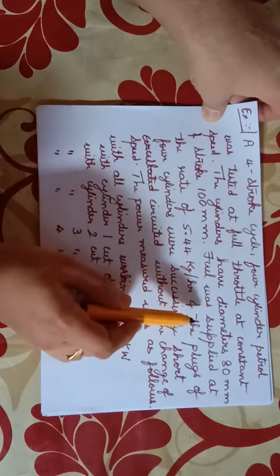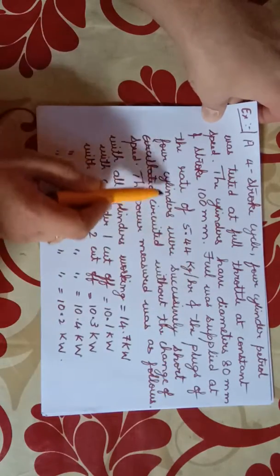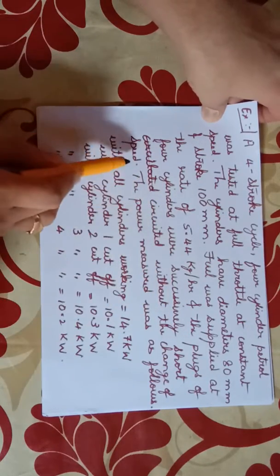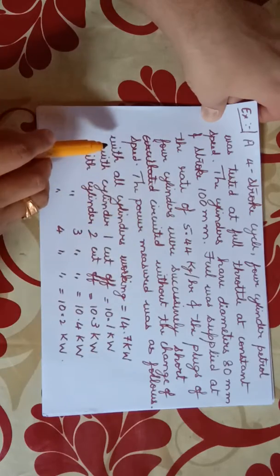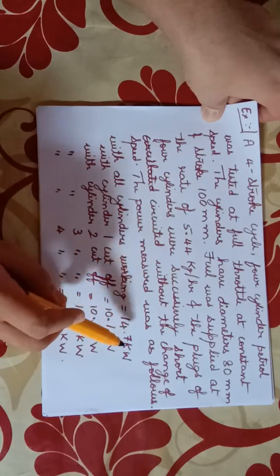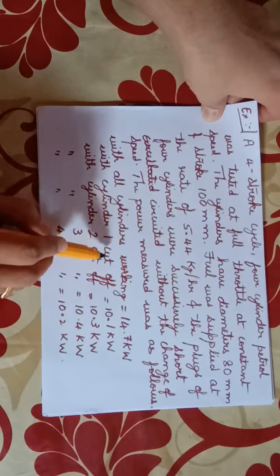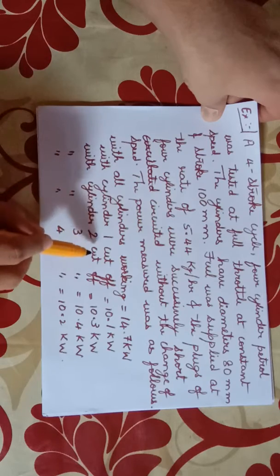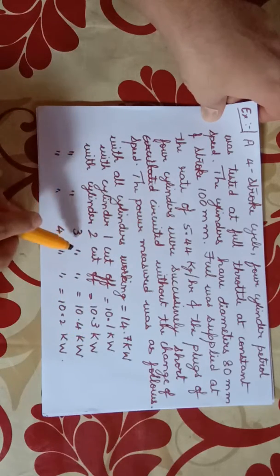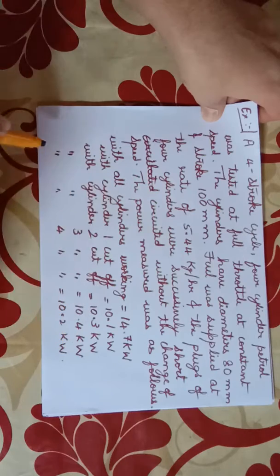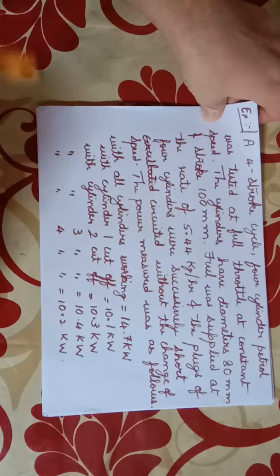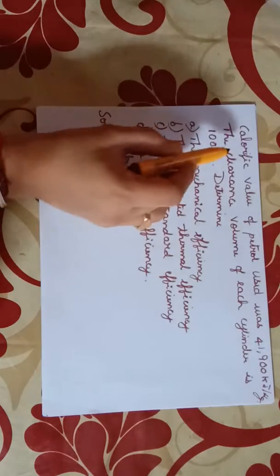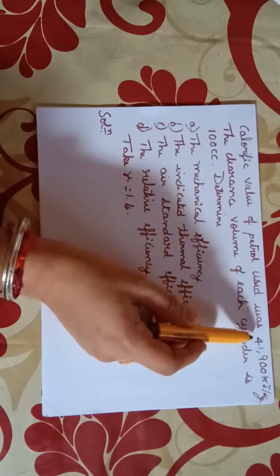The plugs of four cylinders were successively short-circuited without change of speed. The power measured was as follows: with all cylinders working 14.7 kilowatt, with cylinder one cutoff 10.1 kilowatt, with cylinder two cutoff 10.3 kilowatt, with cylinder three cutoff 10.4 kilowatt, with cylinder four cutoff 10.2 kilowatt. Calorific value of petrol used was 41,900 kilojoule per kg.